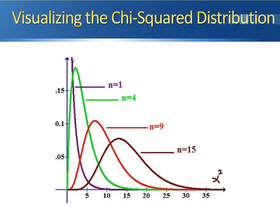Here are a couple of examples of what the chi-squared distribution looks like. The purple distribution is a chi-squared distribution with one degree of freedom — the fewest number of degrees of freedom you can have. Most of the area is concentrated very close to zero. The green curve is a chi-squared distribution with four degrees of freedom. The peak gets moved a little farther to the right and is a little bit lower, with most of the area concentrated right around four.